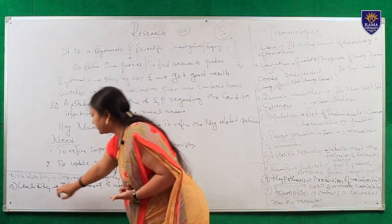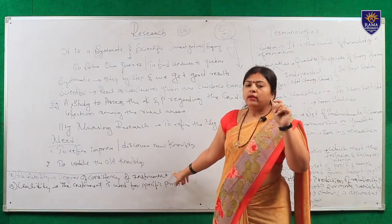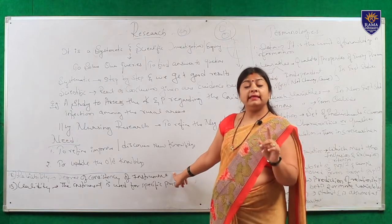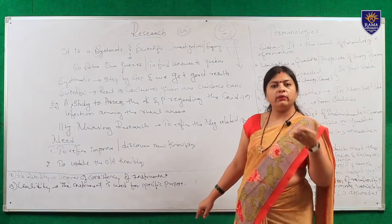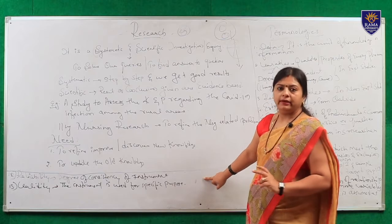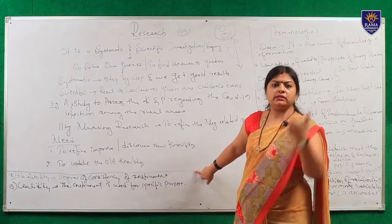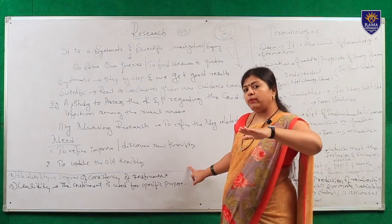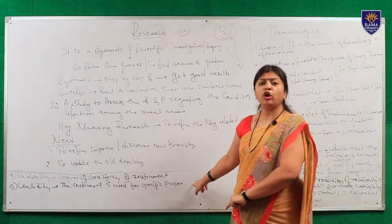Then comes validity. What is validity? Validity is the instrument used for a specific purpose. Going back to the thermometer example - we are using the thermometer for what? For measuring the temperature. That particular instrument is used for the specific purpose of measuring temperature. Similarly, a BP apparatus is used to measure BP, and a weighing machine to weigh the weight. In our research, reliability means when we are making a questionnaire, we are testing it. When we get the same results repeatedly, that particular tool is said to be reliable. And those questionnaires we prepared on knowledge - for what purpose? To assess knowledge only - that is validity.